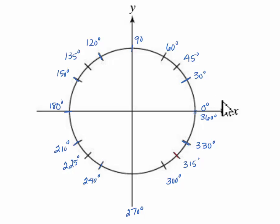So if we start with 0 degrees, 0 degrees is 0 radians. We convert 30 degrees to radians by multiplying by pi over 180. That reduces to pi over 6.